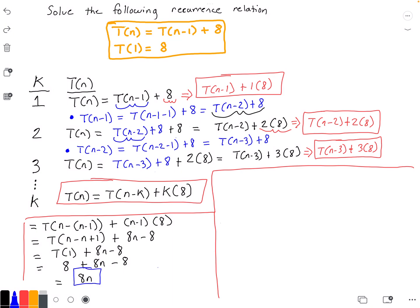In terms of Big-O notation, this function T(n) is O(n), because the fastest growing part of the function is n.